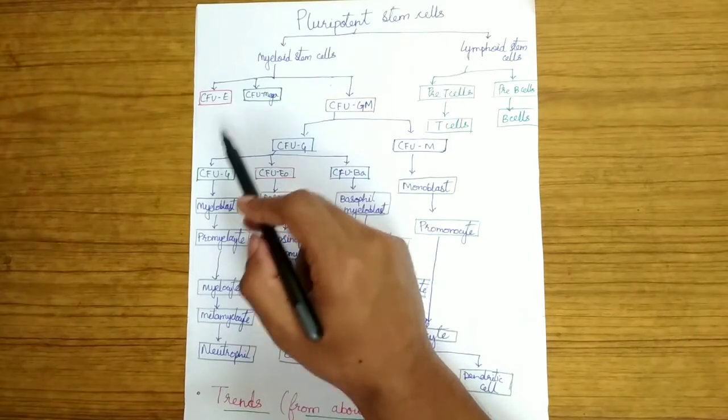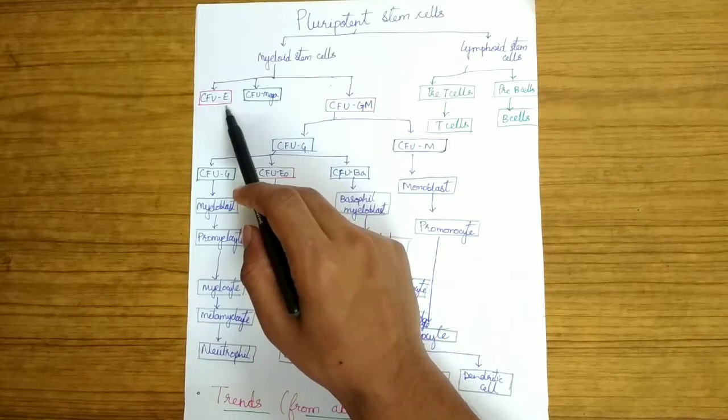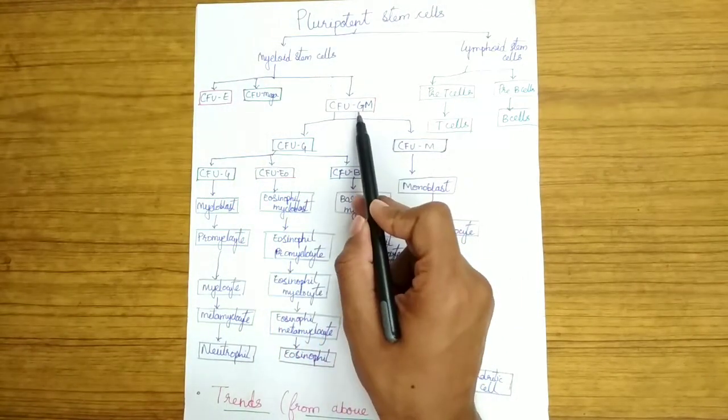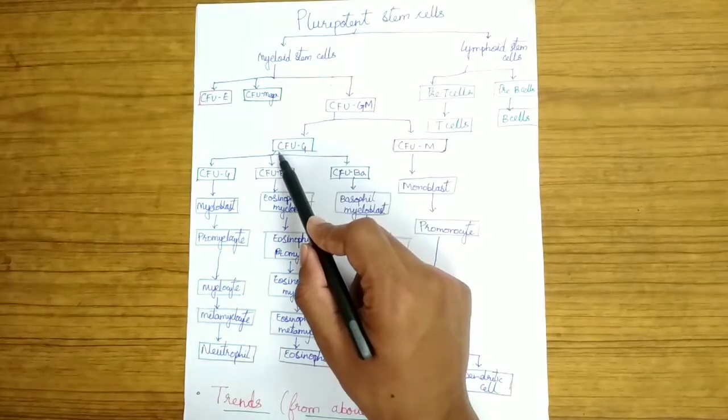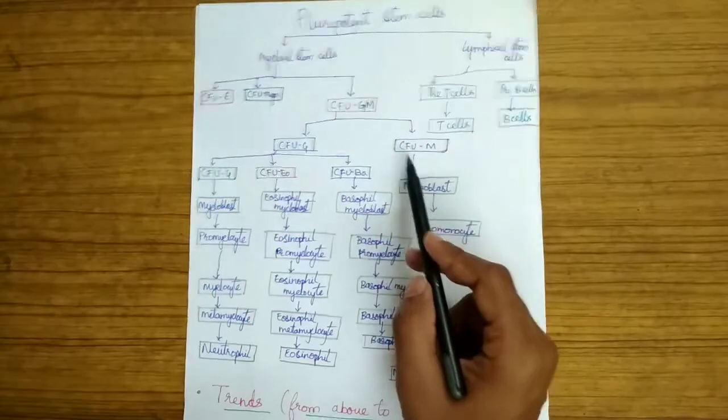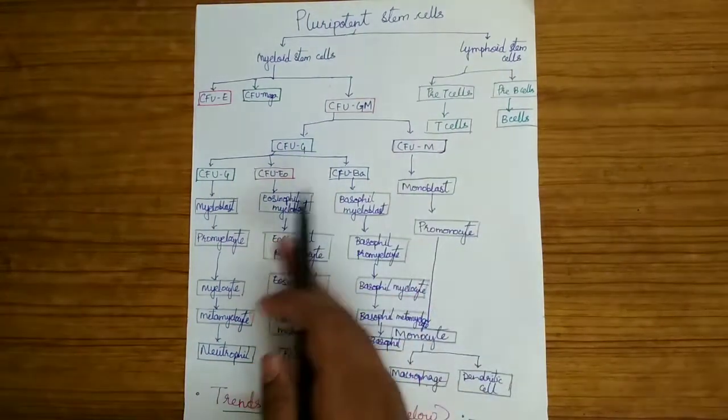The myeloid stem cells divide into colony forming units of erythrocytes, megakaryocytes and granulocyte monocyte cells. This divides into two forms: colony forming units of granulocyte and colony forming units of monocyte. These are two separate lines.